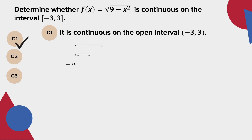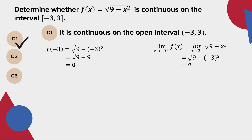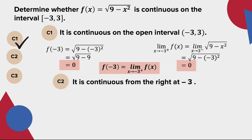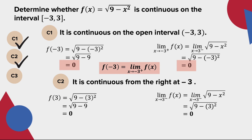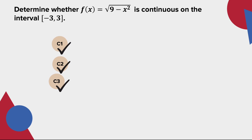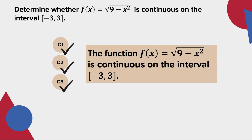For condition 2, since the limit of the function as x approaches -3 from the right is equal to the value of the function at x = -3, the function is continuous from the right at -3. For the third condition, since the limit of the function as x approaches 3 from the left is equal to the value of the function at x = 3, the function is continuous from the left at 3. Since all conditions are satisfied, f(x) = √(9 - x²) is continuous on the interval [-3, 3].